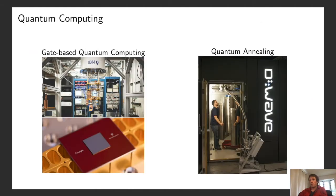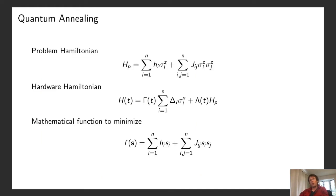There are basically two types of quantum computing hardware currently being developed. One is gate-based quantum computing, pursued very intensely by companies like IBM and Google. Here at Qubits, the focus is more on quantum annealing, because that's the hardware that D-Wave makes. The homomorphic encryption scheme I'm going to talk about doesn't directly apply to gate-based quantum computing — it's really focused on quantum annealing.